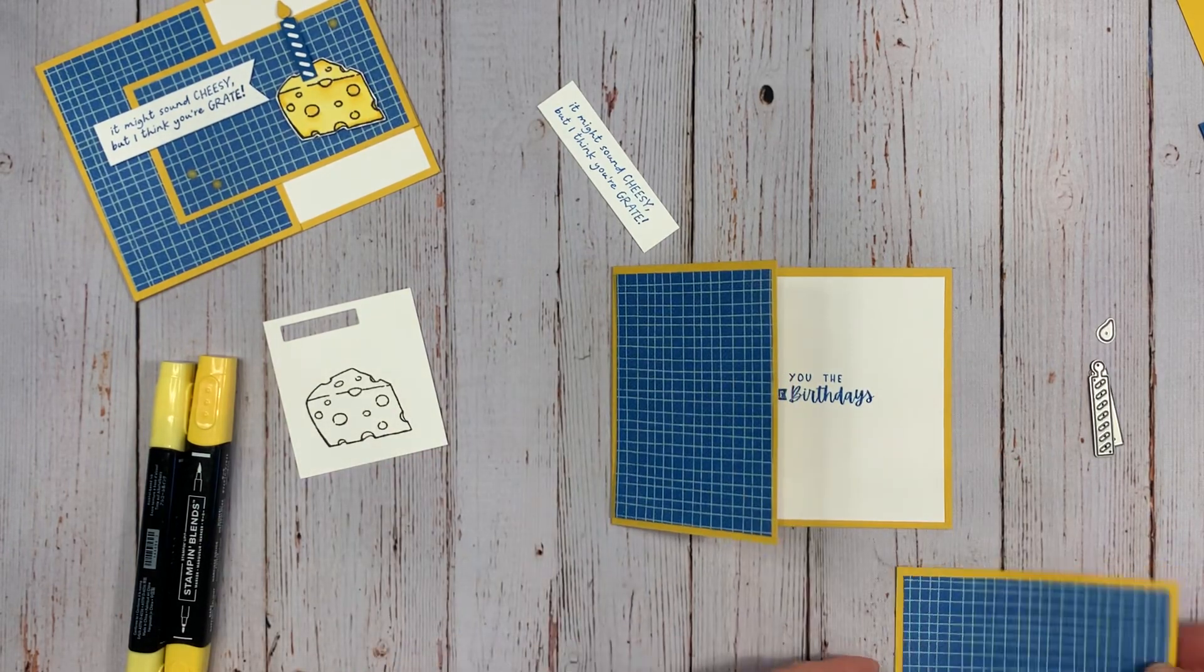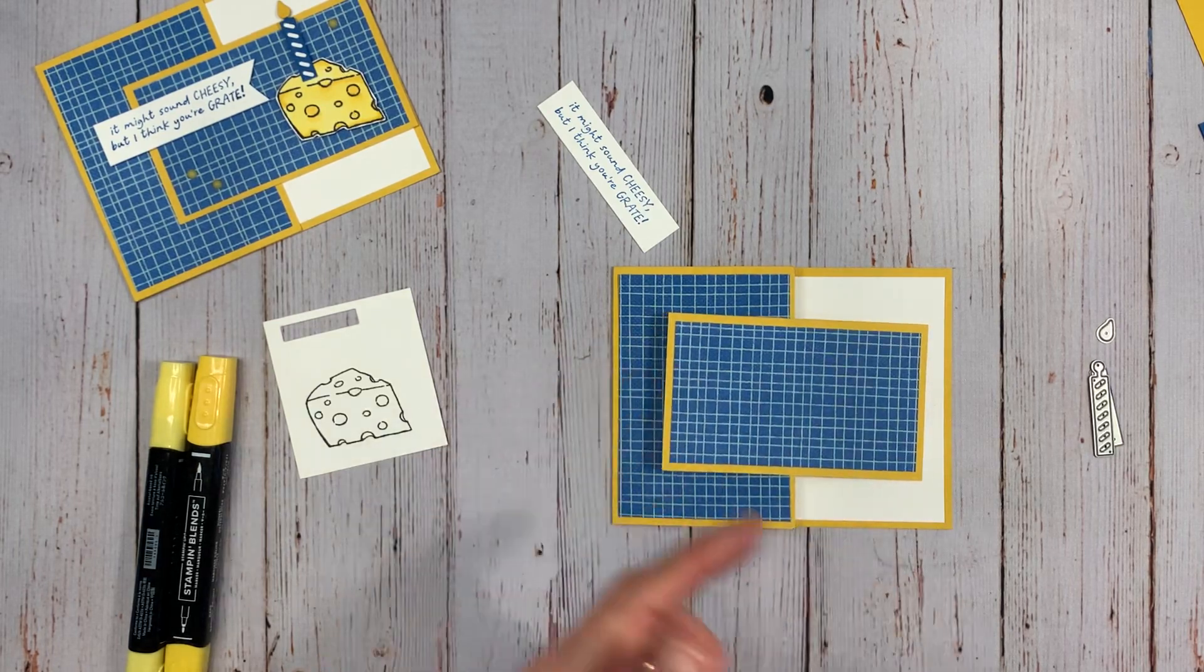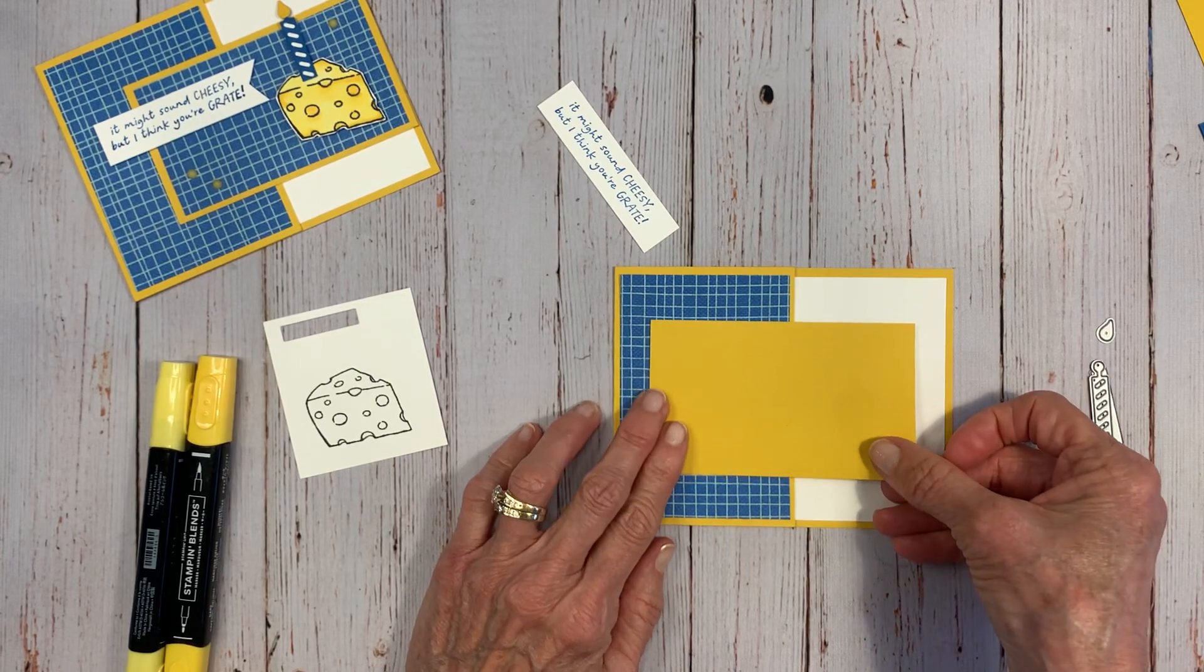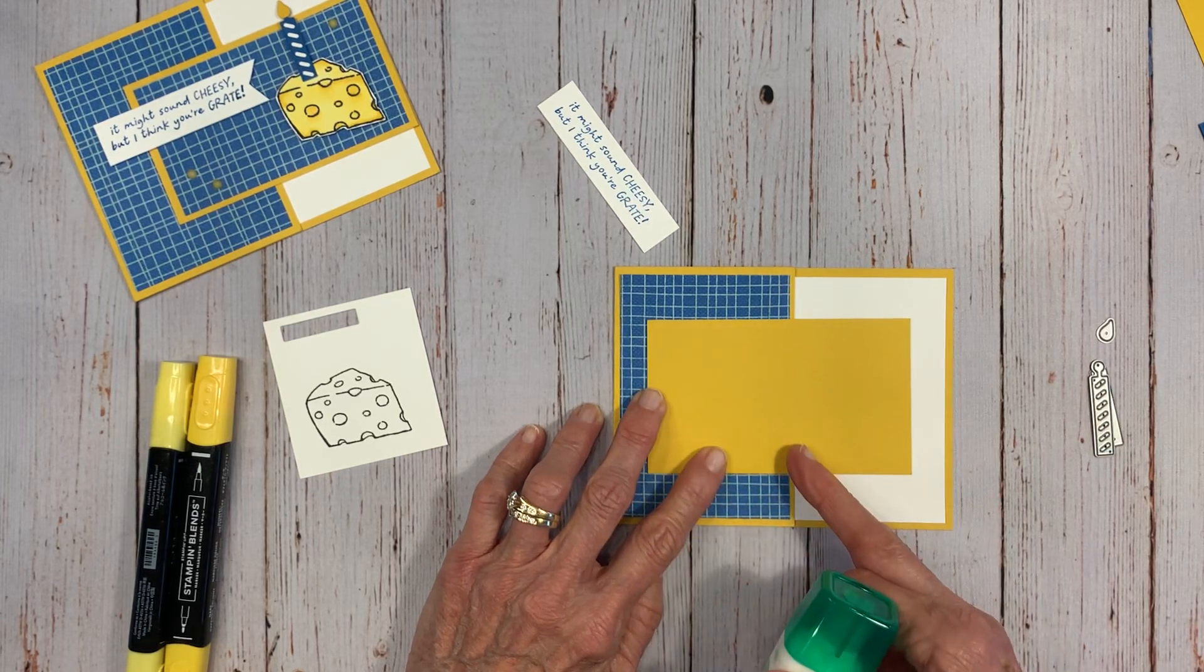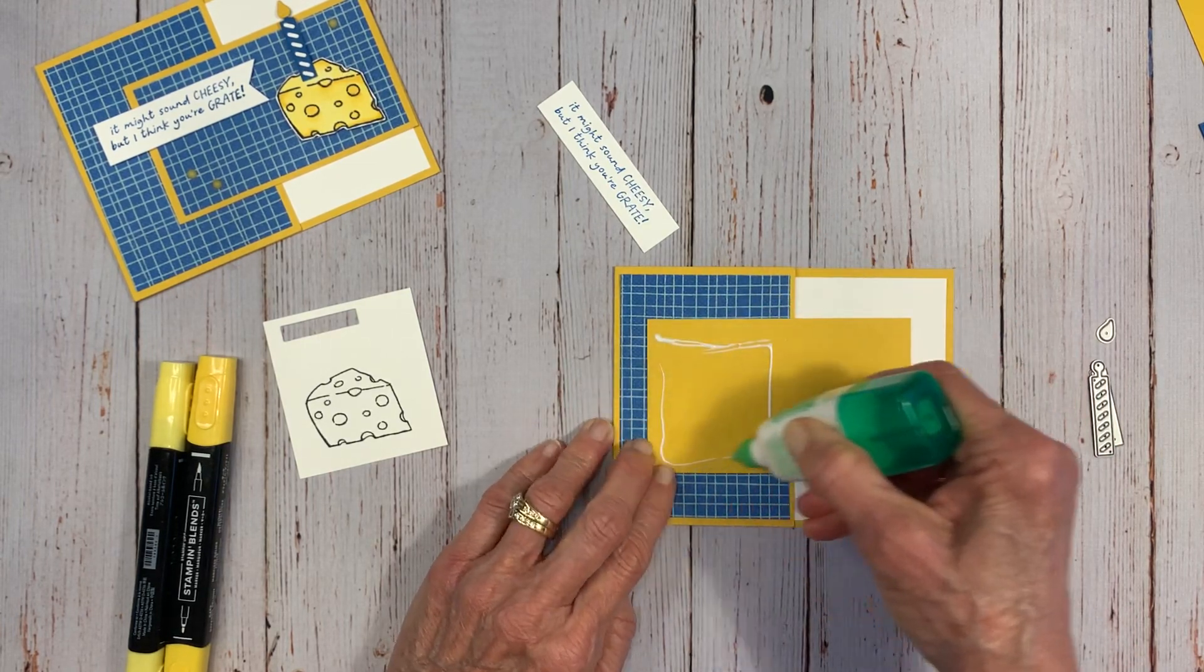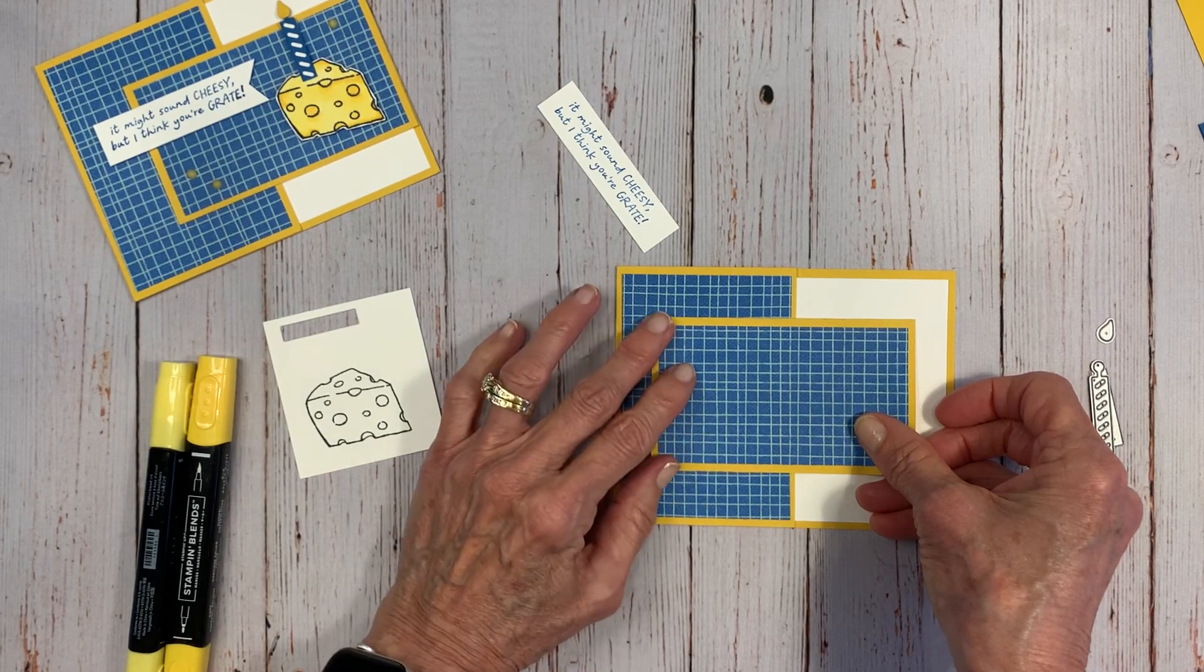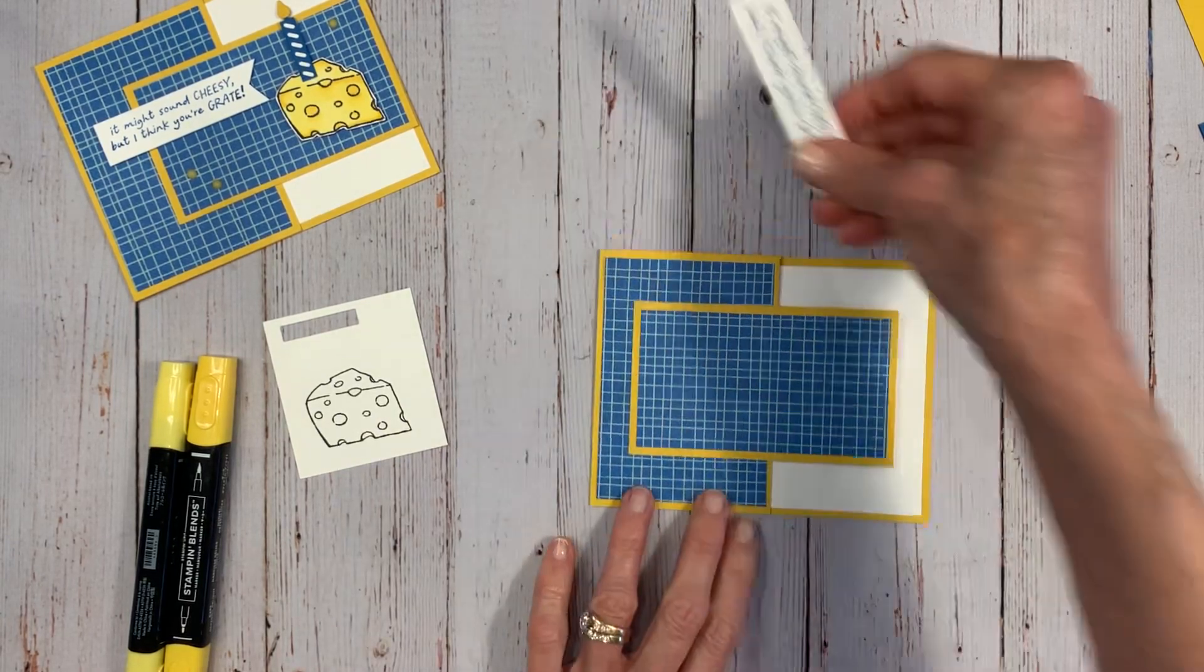And now I'm going to attach this piece here. So of course you want to make sure you only adhere your adhesive on the left side. So what I like to do is I turn it this way. See how I did that? I just flipped it that way. And then I can see where that ends. I've got it all lined up where I want it to be so I know I don't want adhesive any further. I don't want it on this side so that it will not glue it so I don't glue it shut. And now we get to decorate the card.